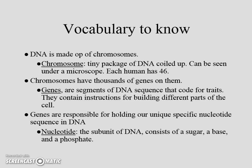Vocabulary you need to know. DNA is made up of chromosomes. A chromosome is a tiny package of DNA coiled up. It can be seen under a microscope, and each human has 46 chromosomes. Depending on the animal, species, or plant you are referring to, it has different numbers of chromosomes. Us as humans, we have 46.